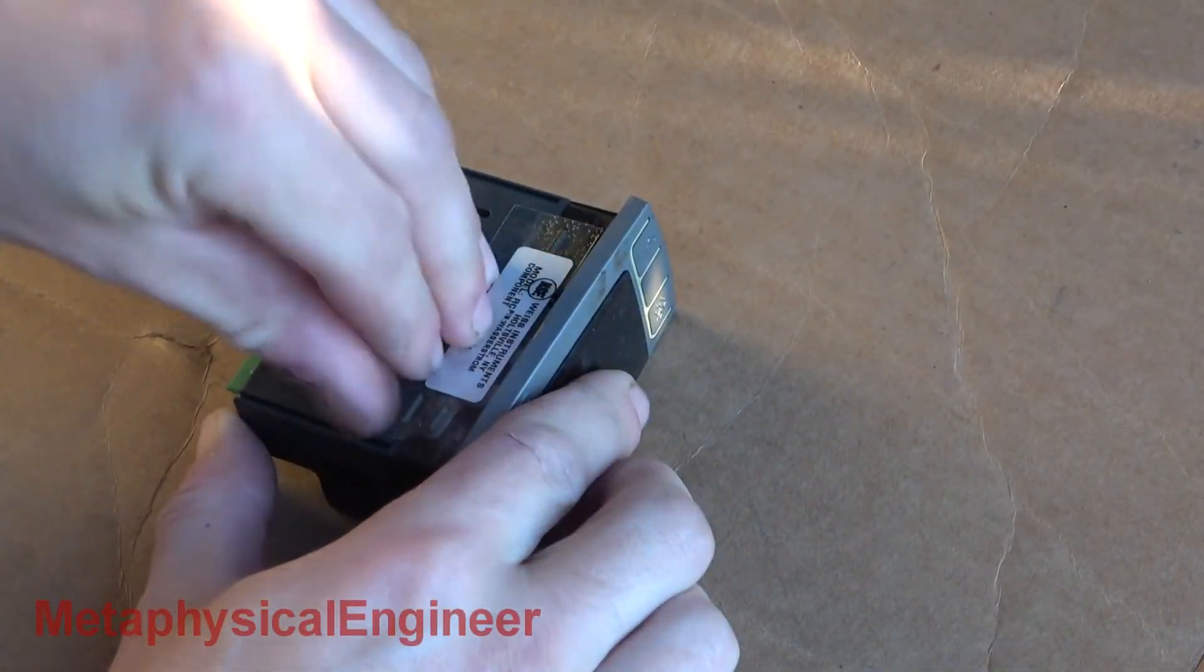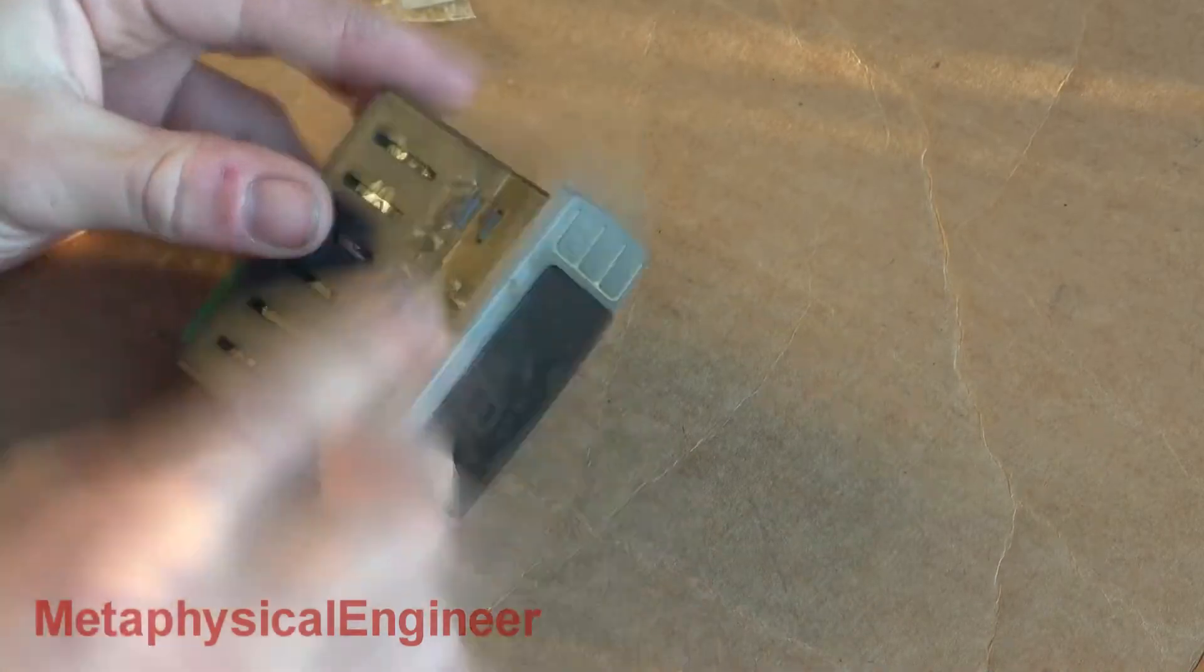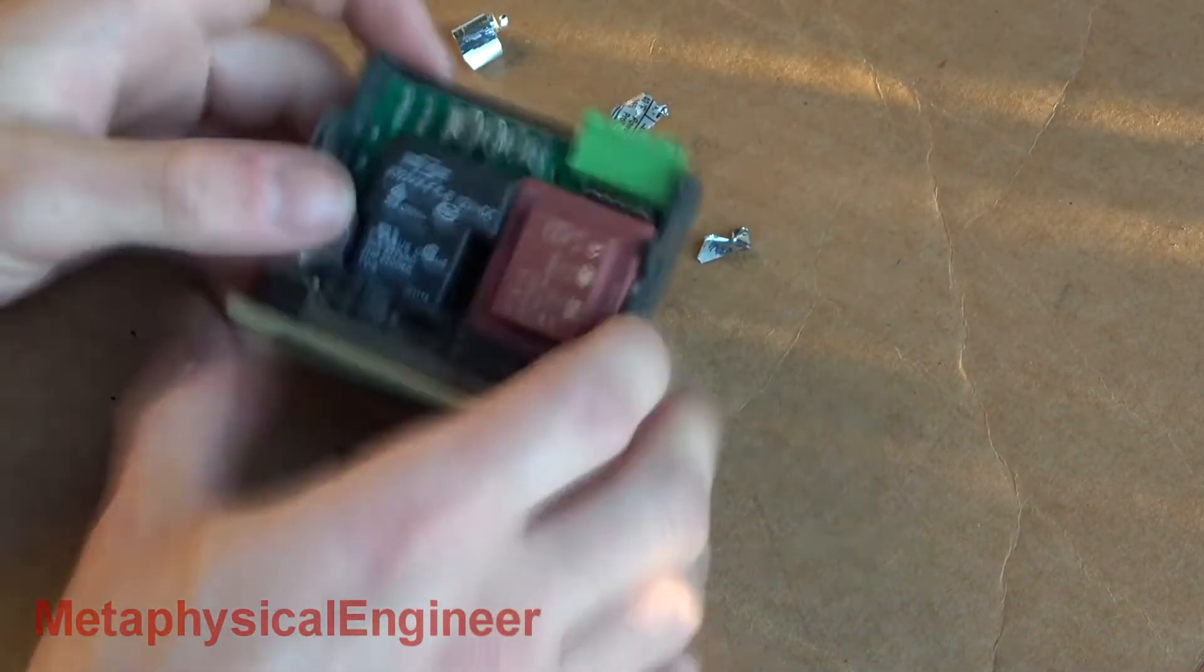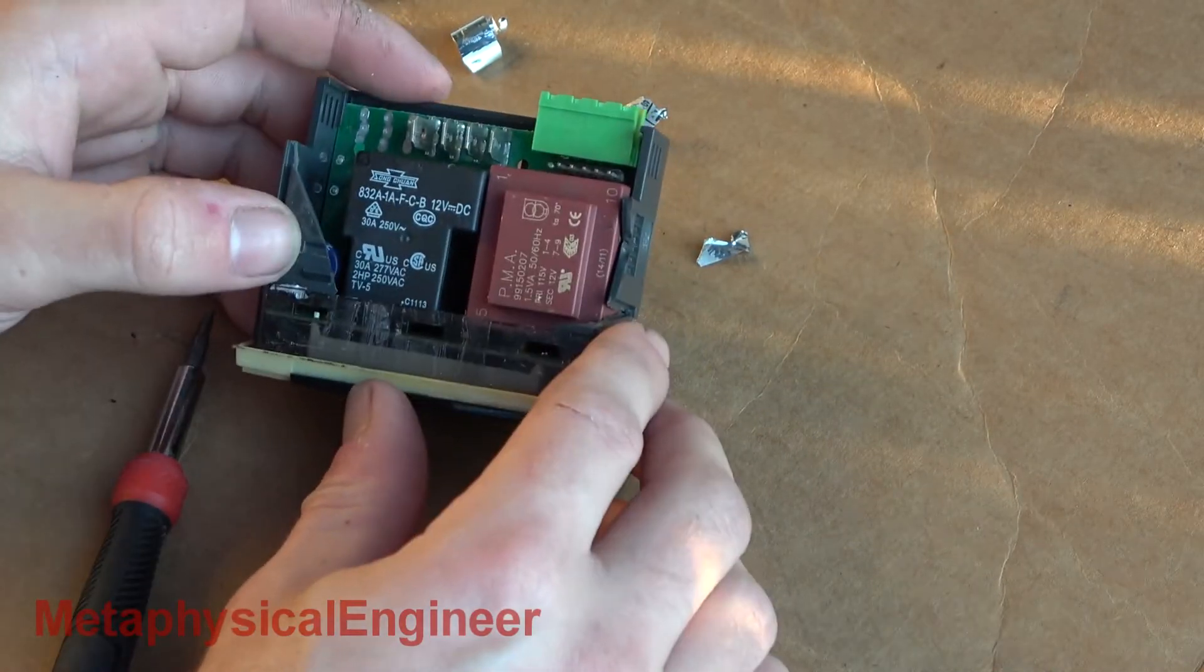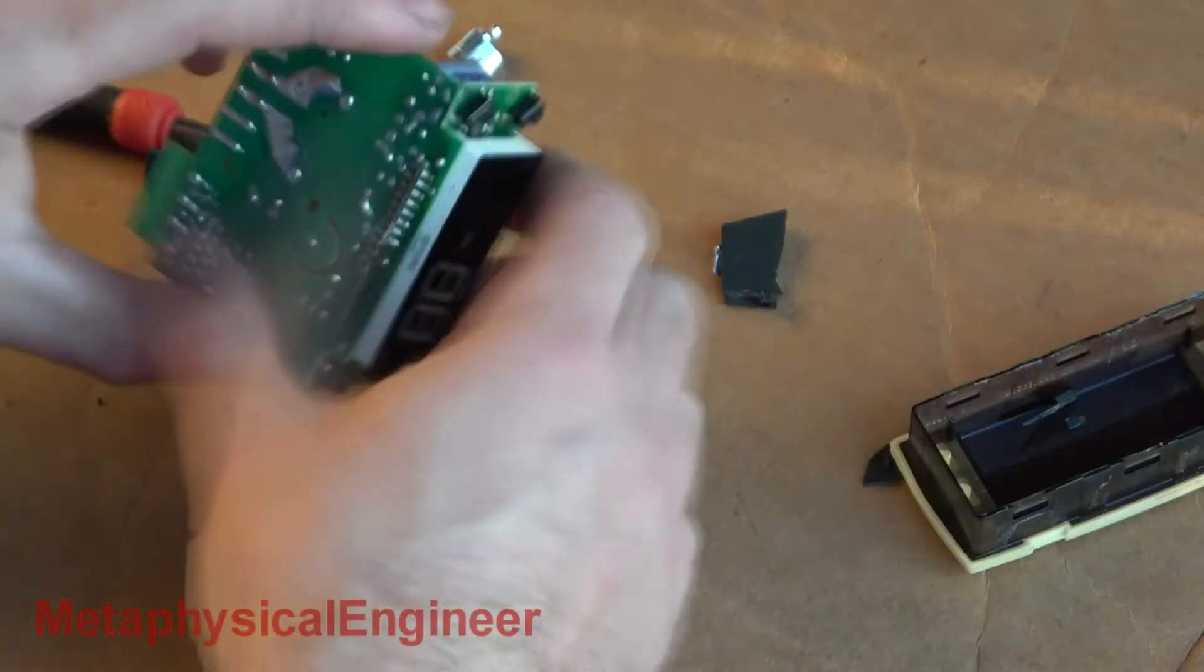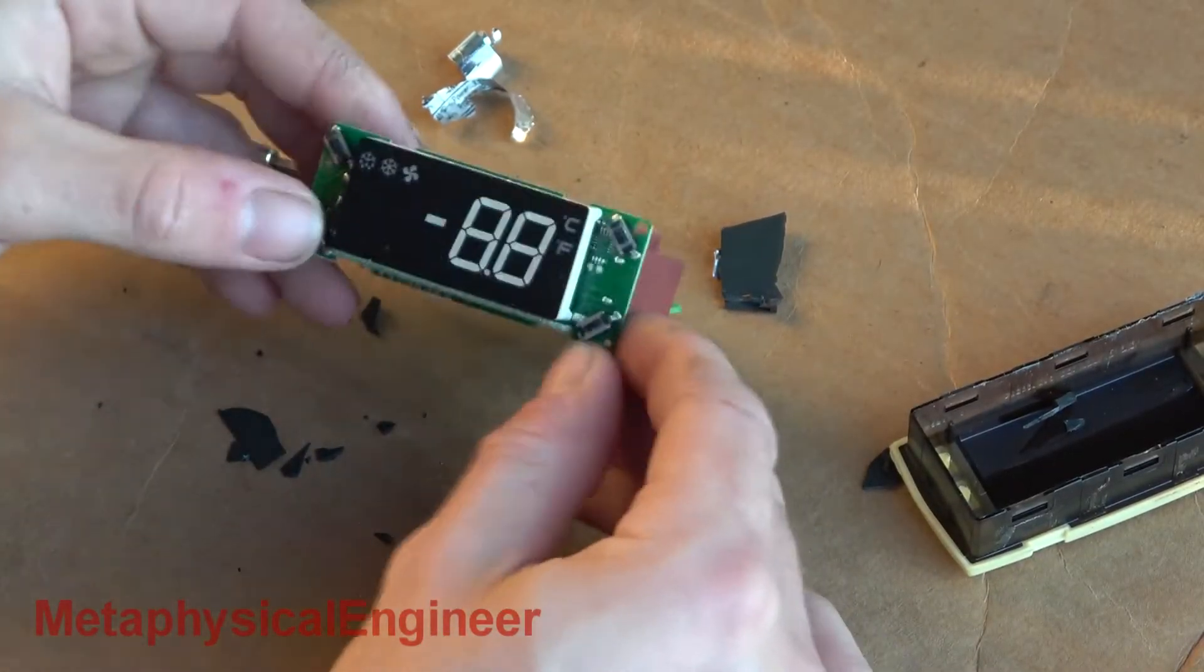Time to take it apart. The chassis is flimsy plastic that clips together. I'm not exactly being nice, and it's not exactly cooperative, so damage is inevitable. There's not a lot going on in here. One relay, an itty bitty transformer, and looks like the microcontroller is on the same vertical board that holds the display and buttons.